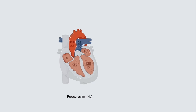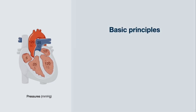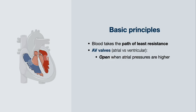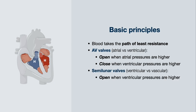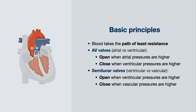We will now review the basic principles of blood flow through the cardiac chambers. Blood tends to flow towards the path of least resistance — that is, from high-pressure environments to lower-pressure ones. The cardiac cycle is effectively caused by a series of pressure changes in the cardiac chambers and major vessels propelling blood in a specific direction. AV valves open when atrial pressures are higher than ventricular pressures and close when ventricular pressures are higher. The semilunar valves open when ventricular pressures exceed vascular pressures and close when vascular pressures exceed ventricular pressures.